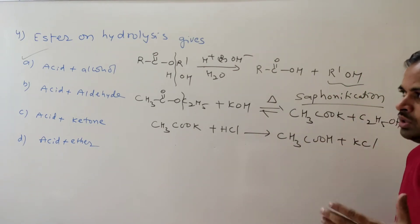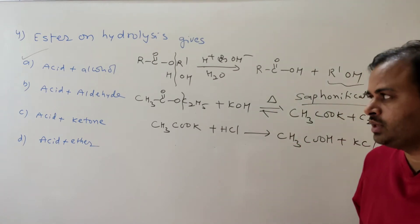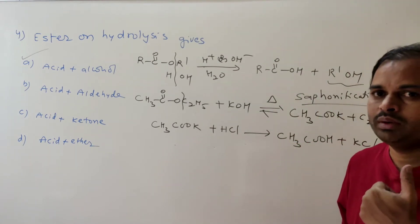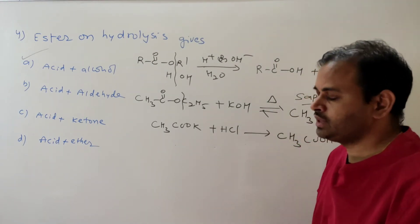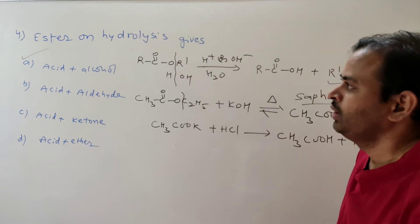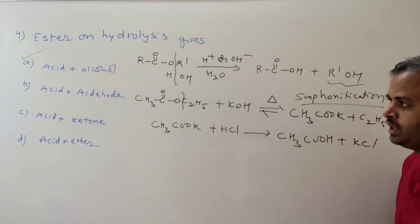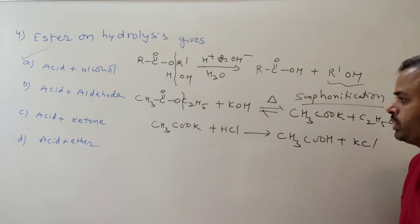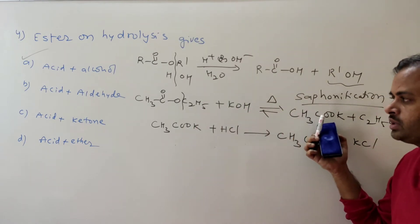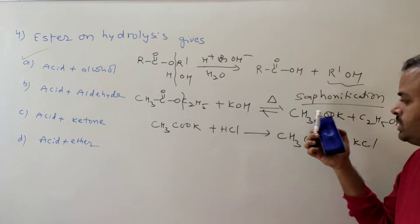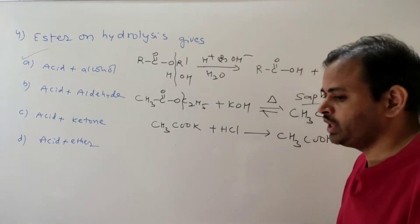From ester hydrolysis we can prepare alcohols and acids. Since our topic is carboxylic acid, the main product of ester hydrolysis is carboxylic acid.